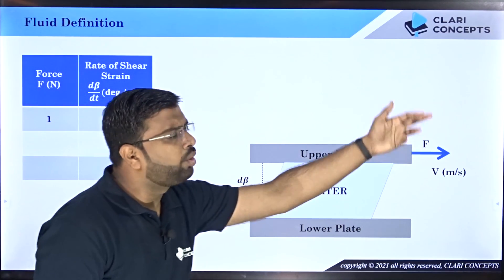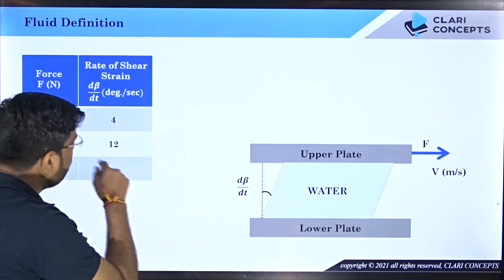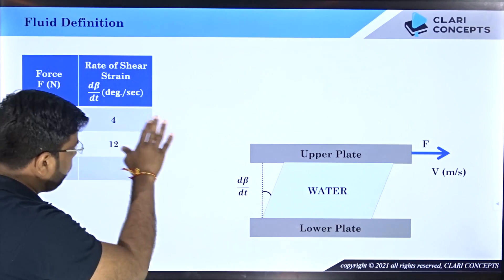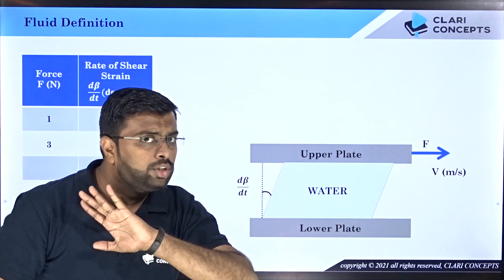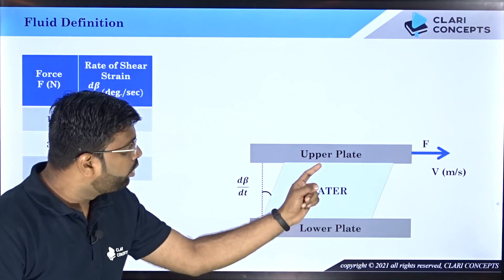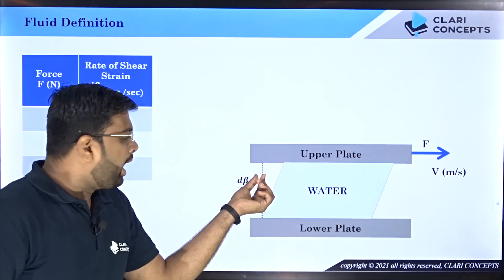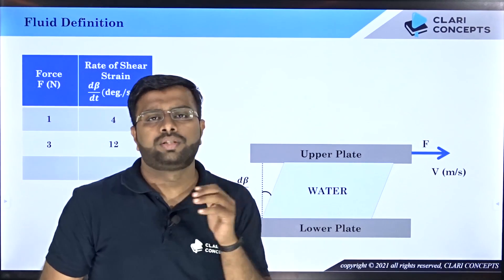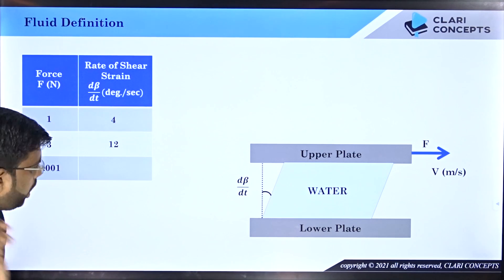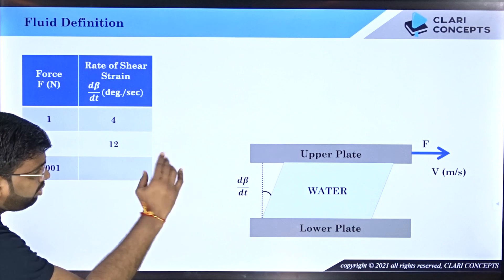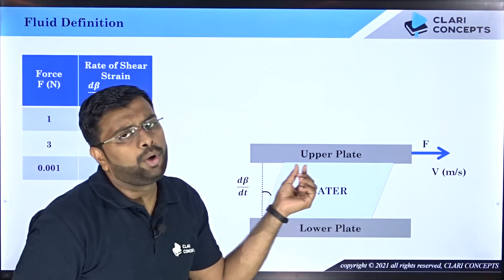If you increase the force to three newtons, the deformation keeps happening but the rate increases — now 12 degrees per second instead of four. In solid, there was no continuous deformation; it was fixed at a certain angle. In fluid, the fluid never becomes steady; it keeps deforming, but the rate of deformation is a particular value depending on the force. Even if you reduce the force to a very very small value like 0.001 newton, the rate becomes very small — say 0.004 degrees per second — but the fluid will still continuously keep deforming.